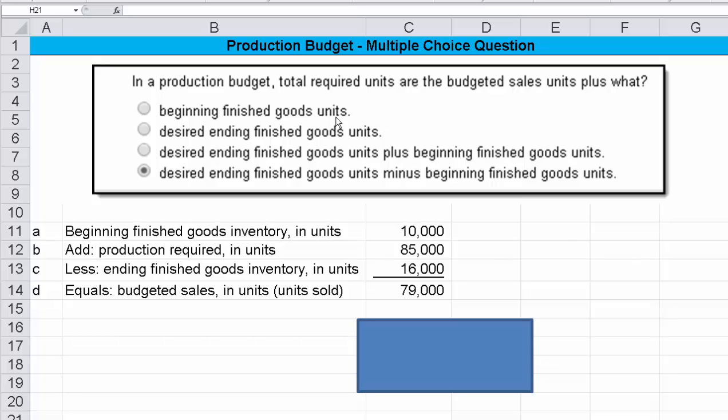Is it budgeted sales plus beginning finished goods? Is it budgeted sales units plus desired ending finished goods? Is it budgeted sales units plus desired ending finished goods plus beginning finished goods? Or is it budgeted sales units plus desired ending finished goods minus beginning finished goods?